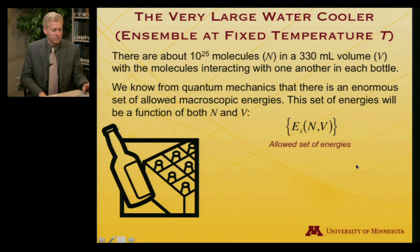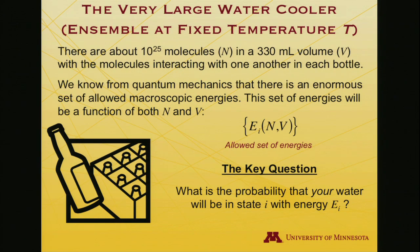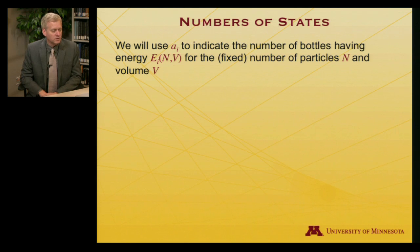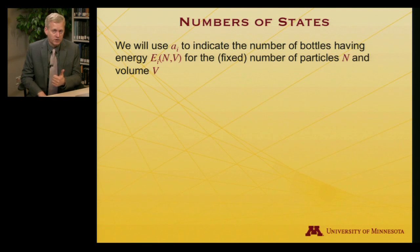I reach into my infinite water cooler and pick out a bottle of water. The question is: what's the probability that the one I pick out will have a specific energy? I've indexed it by i — it'll be in state i with energy E_i. Let A_i be how many bottles in the ensemble — in the infinite water cooler — have that energy E_i, given a fixed number of particles and fixed volume.